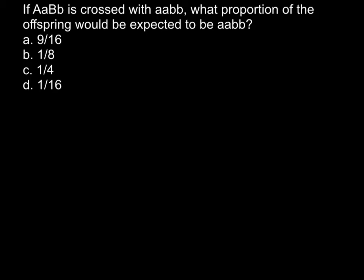Today's problem: if one parent that is heterozygous for both alleles A and B is crossed with another parent that is homozygous recessive for both alleles, what proportion of the offspring would be expected to be like parent 2? Here are 4 answers to choose from. If you know how to solve this, pause the video, try it, then compare your answer with my explanation.